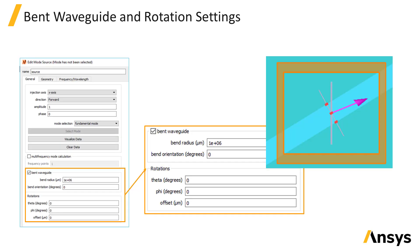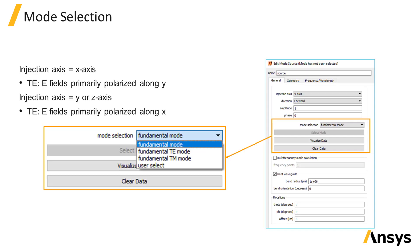The mode source settings allow you to specify whether you want to find the mode for a straight or bent waveguide with a given bending radius, and also specify rotation angles to match the angle of the waveguide if the waveguide is not aligned with the X, Y, or Z axis. You can choose to inject the fundamental mode, which is the mode with the highest effective index, or the fundamental TE or fundamental TM mode, which correspond to the mode with the highest effective index that has the desired TE-like or TM-like polarization.